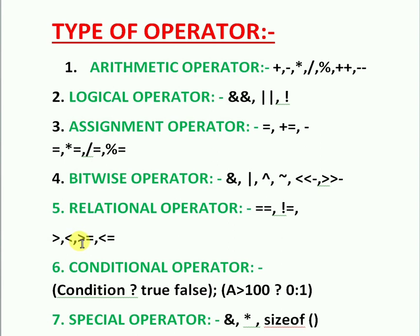Less-than (<) checks if the first operand is lesser than the second operand. Greater-than-or-equal-to (>=) checks if the first operand is greater than or equal to the second. Less-than-or-equal-to (<=) checks if the first operand is lesser than or equal to the second.